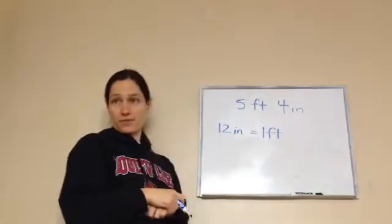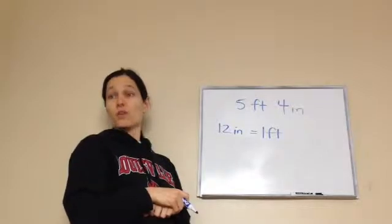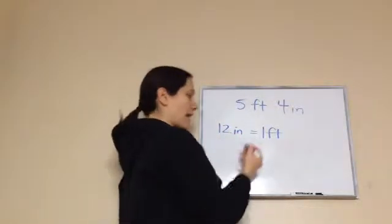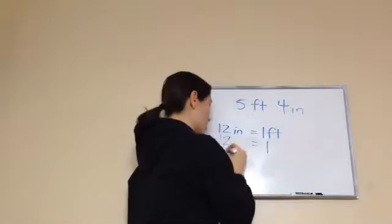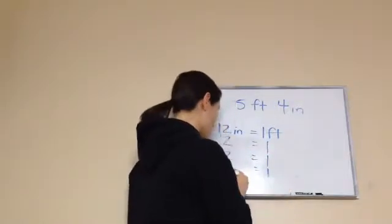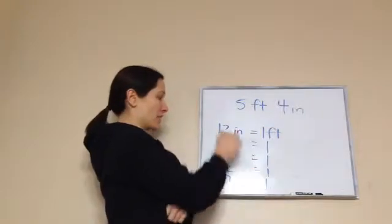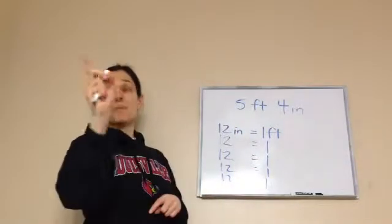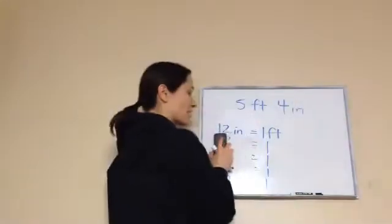What should I do with that 12? 5 times 12, right? I can do 12 times 5, or I could go 12 more equals 1 foot, 12 more equals 1 foot, 12 more equals 1 foot, 12 more equals 1 foot — and that would be 5 feet and we would add up all those 12s. But that idea is quicker.